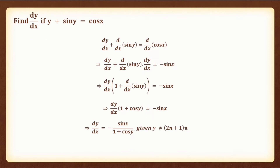The next question is: find dy by dx if y plus sin y is equal to cos x. Differentiating the given equation: dy by dx plus d by dx of sin y is equal to d by dx of cos x. This implies dy by dx plus cos y into dy by dx is equal to minus sin x. Taking dy by dx common on the left hand side: dy by dx into 1 plus cos y is equal to minus sin x, because d by dx of sin y is equal to cos y. This implies dy by dx is equal to minus sin x by 1 plus cos y, given y is not equal to 2n plus 1 into pi.